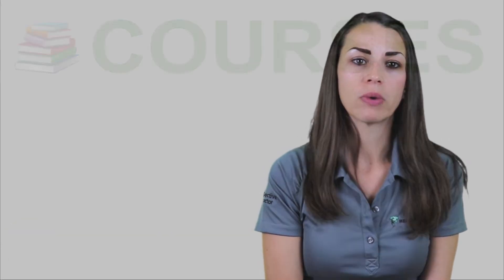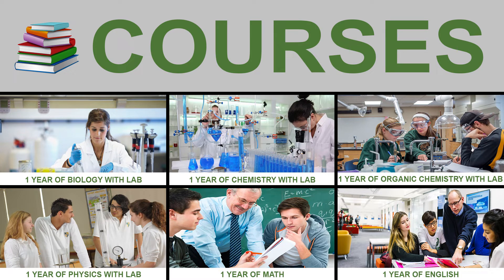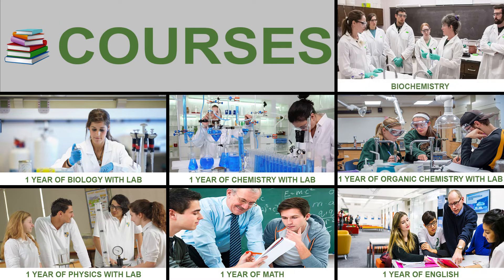The typical prerequisite courses are one year of biology with lab, one year of general chemistry with lab, one year of O-chem with lab, one year of physics, and one year of math and English. In addition, some schools require biochem or psychology. It's important to check each school's individual requirements before applying.